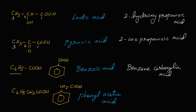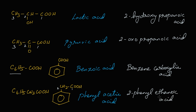Benzoic acid has a benzene ring with a carboxylic acid group, so its IUPAC name is benzenecarboxylic acid. Phenyl acetic acid is ethanoic acid with a phenyl group attached at the second carbon, so the IUPAC name is 2-phenylethanoic acid.